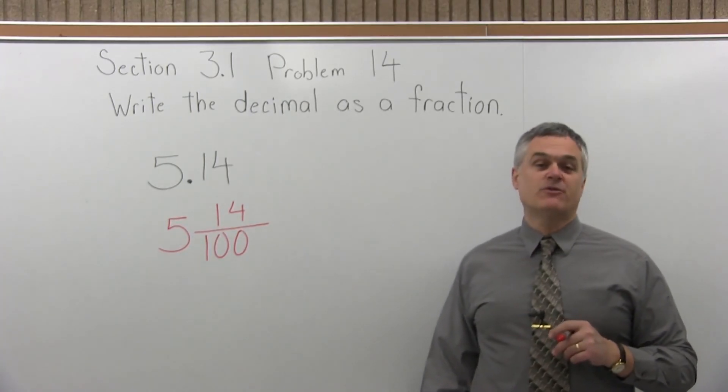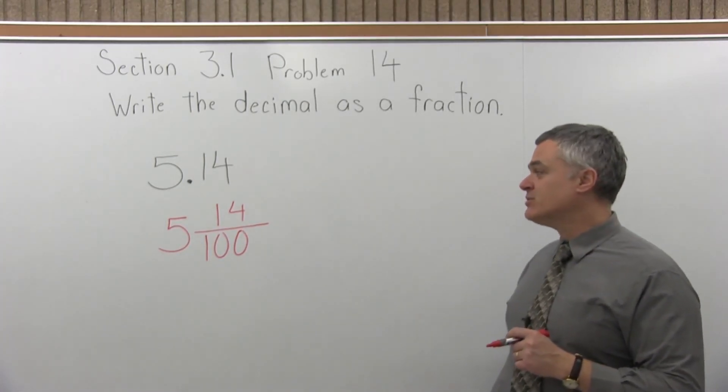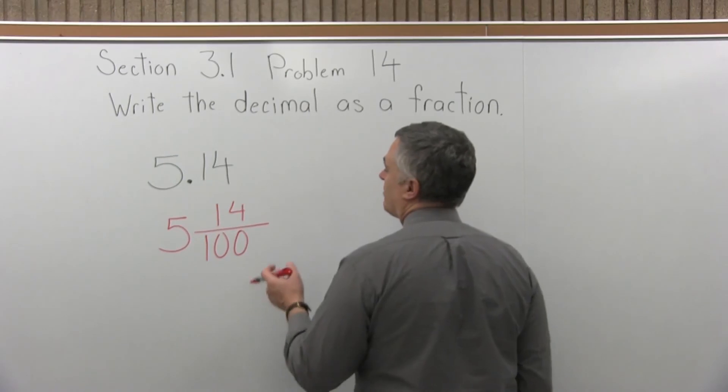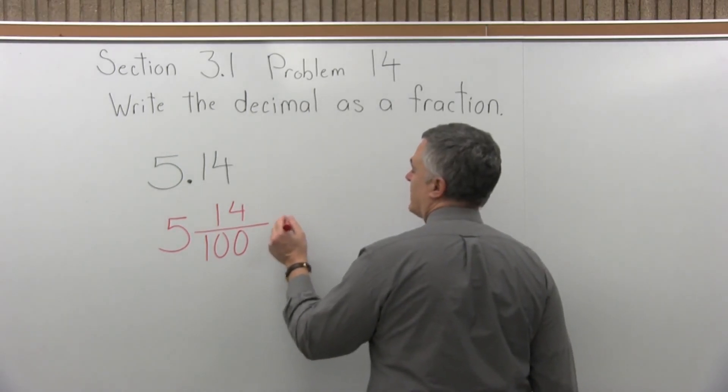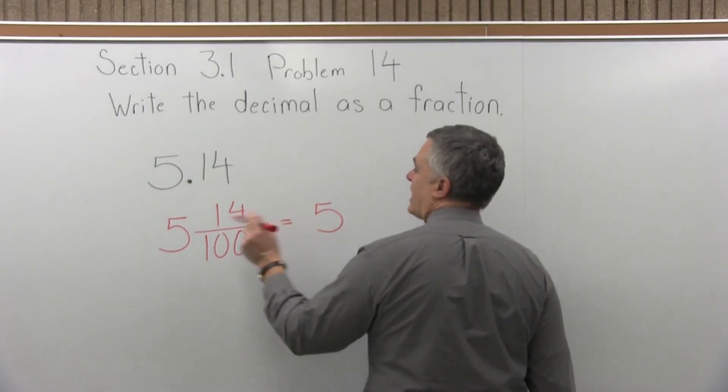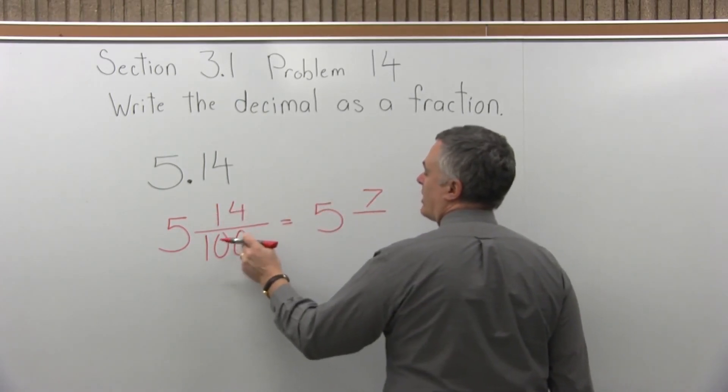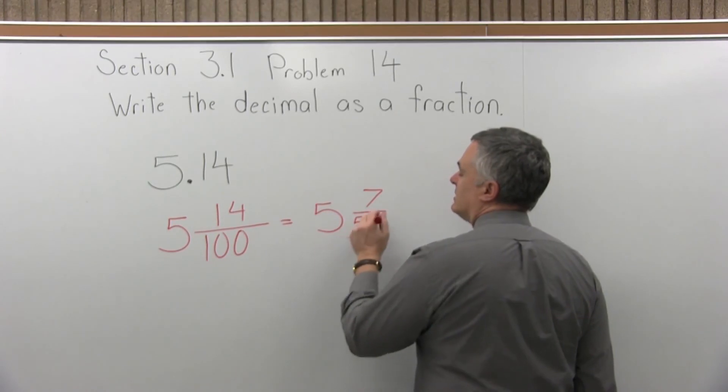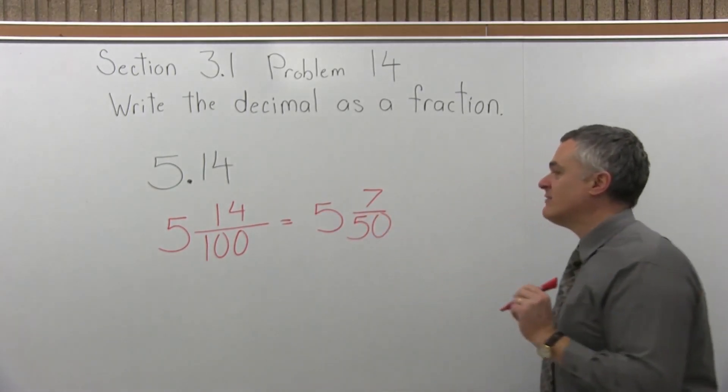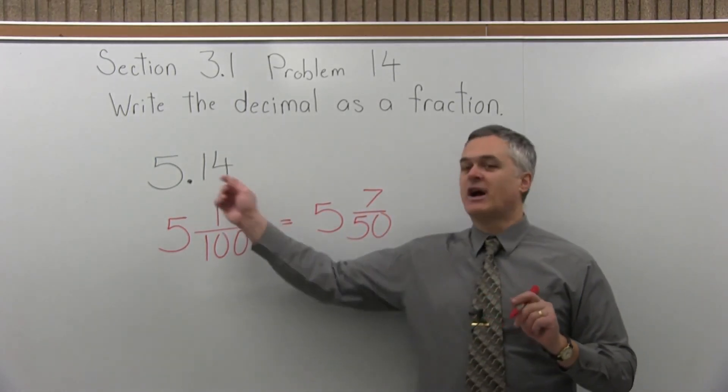Step four is reduce the fraction if it is reducible. And this one is, 14 and 100 are both even, so I can at least cut them in half. So the 5 in front of the fraction will stay in front. And half of 14 is 7, half of 100 is 50, so my answer is 5 and 7-fiftieths. That's equivalent to 5.14.